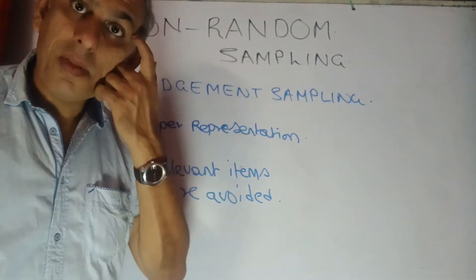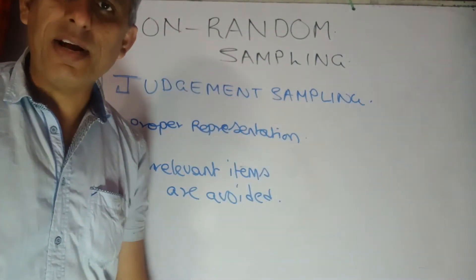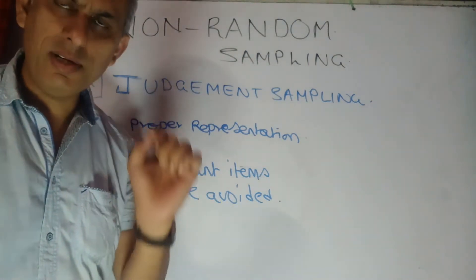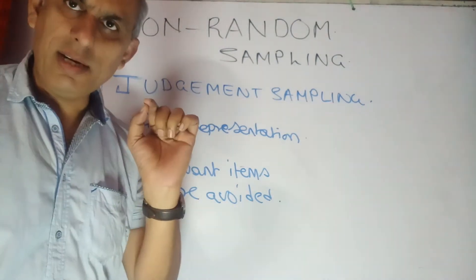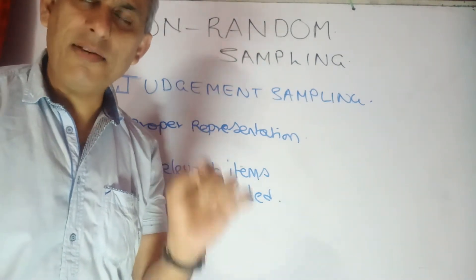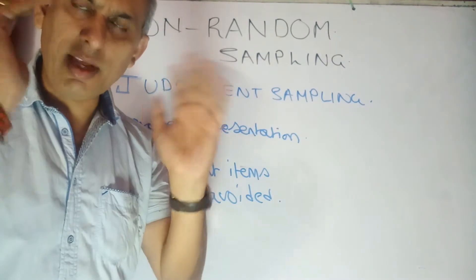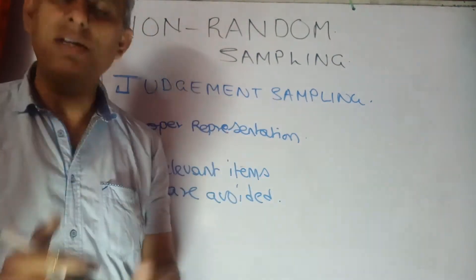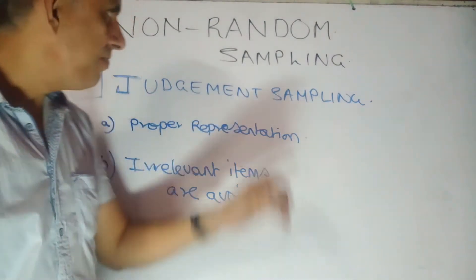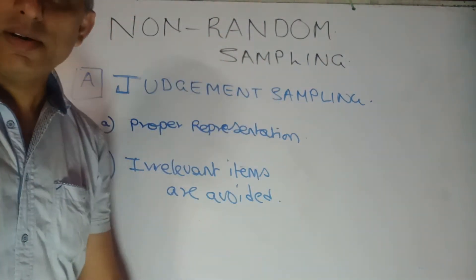Good morning students. Having covered various types of random sampling, now let's move on to something which is purely based on the investigator's instinct and his understanding of the sample. He will use his own thinking, rationale, and judgment in deciding the sample and its components — what we call non-random sampling.